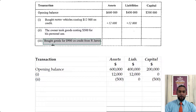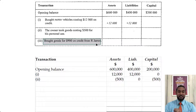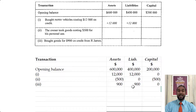Next: bought goods for 900 on credit from R. James. If you bought goods, goods is an asset — it's increasing, so we put plus 900 under the assets column. If you bought it on credit it means you didn't pay for it, which means your liabilities are going up as well. So assets and liabilities are both going up by 900.